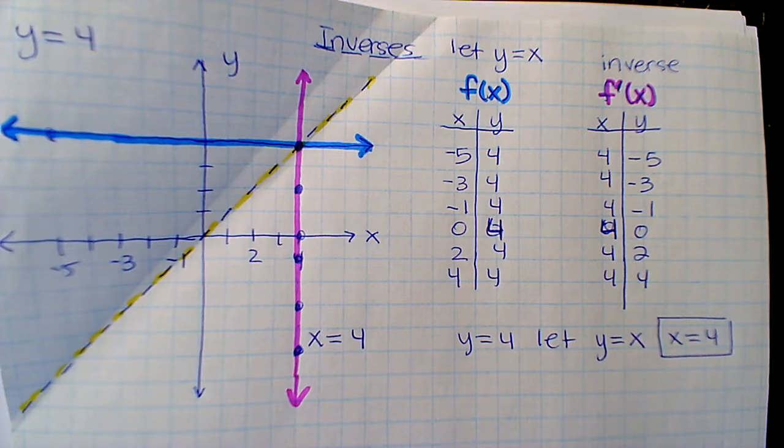So thus, that would make it a vertical line, because what's the slope of a vertical line? It's undefined.